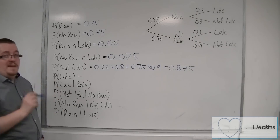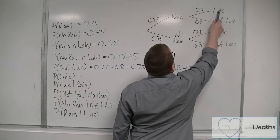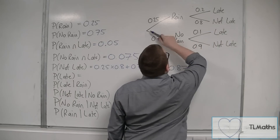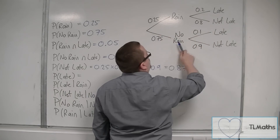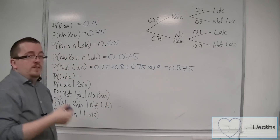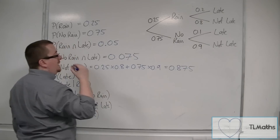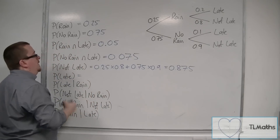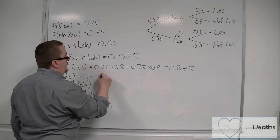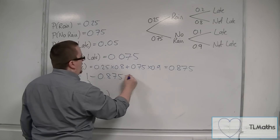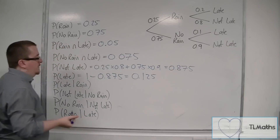The probability of being late — there are two ways of getting there: rain and late, or no rain and late. But seeing as we've already calculated the probability of not being late, the probability of being late is 1 take away that number. So that's equal to 0.125, or one eighth.